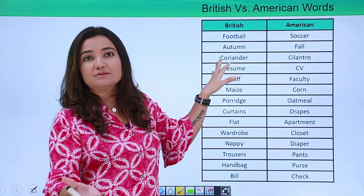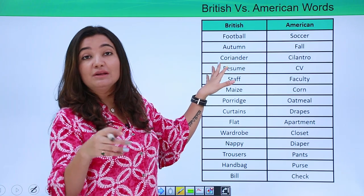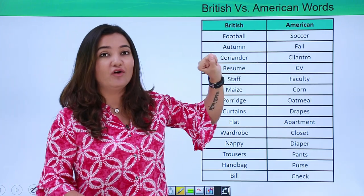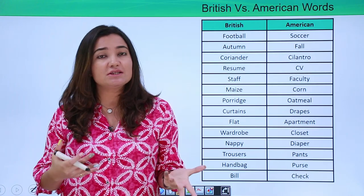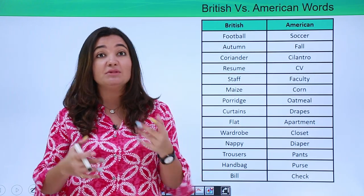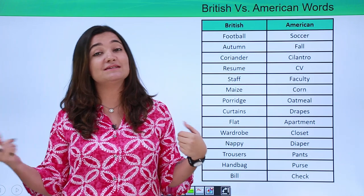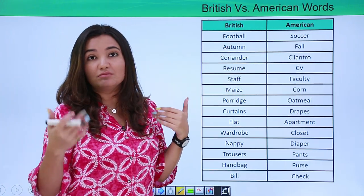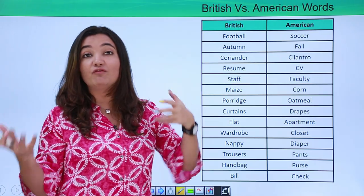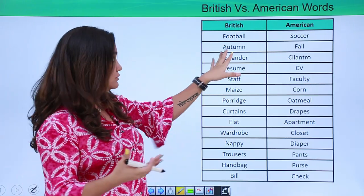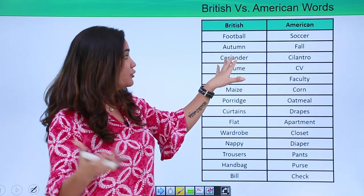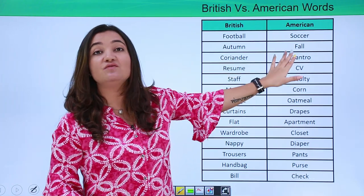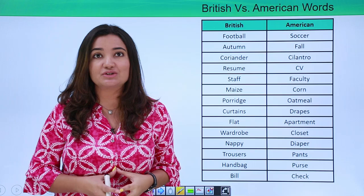How about autumn? In British English it's called autumn, whereas Americans would call it fall. College students often take admission in the fall season or the spring season. That season referred to as autumn in British English is referred to as fall in American English.